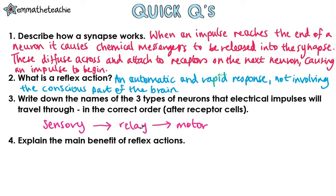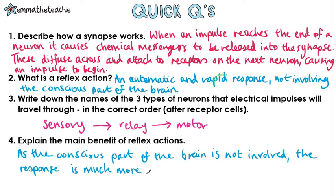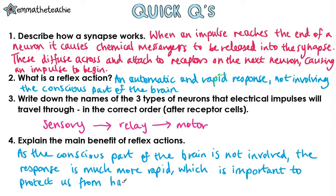Explain the main benefit of reflex actions. Well, since the conscious part of the brain is not involved, the response is much faster. This is important in harmful or dangerous situations. It protects us.